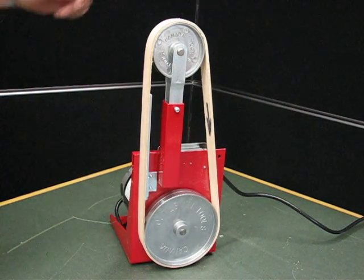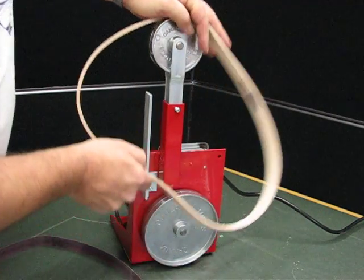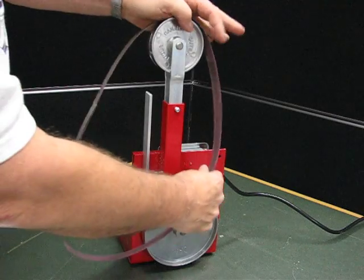So to change the belts from either a grinding or sharpening belt to the leather belt, you simply push down on that top pulley, take the belt off, and put the new one on.